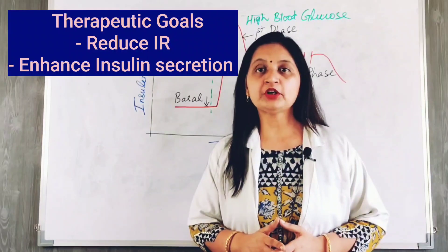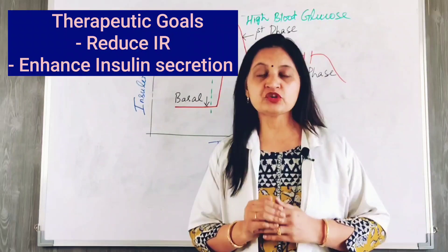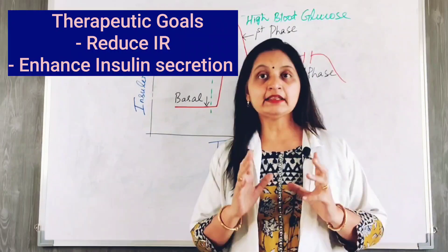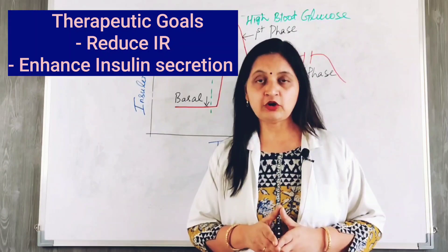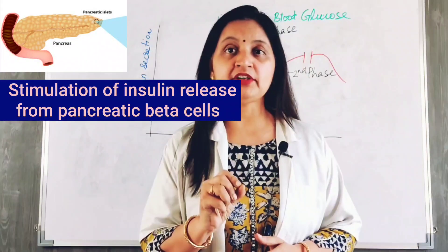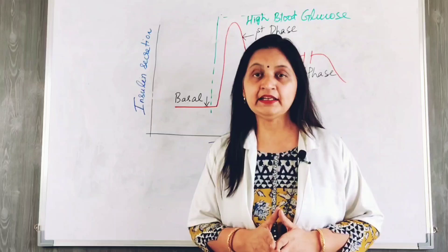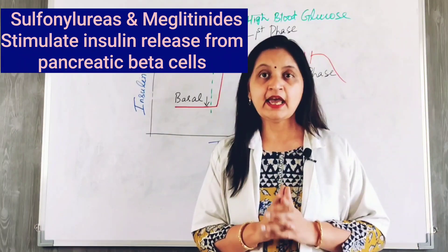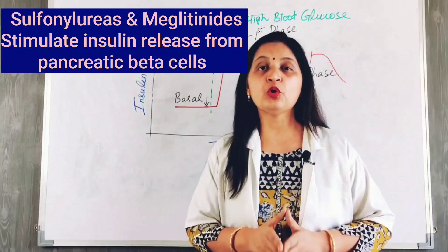The therapeutic goal in the management of diabetes is to reduce insulin resistance in target organs such as skeletal muscle, adipose tissue, and liver, and to enhance insulin secretion from the pancreatic beta cells. This helps to restore insulin secretion, maintain euglycemia, and helps to prevent complications. One strategy in designing anti-diabetic drugs is to stimulate the pancreatic beta cells using sulfonylureas and meglitinides, which act directly on the beta cells through receptors to increase insulin secretion and lower blood glucose.